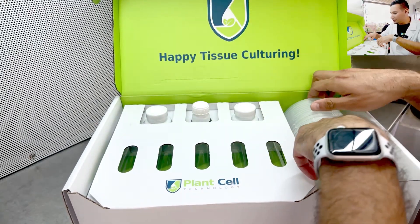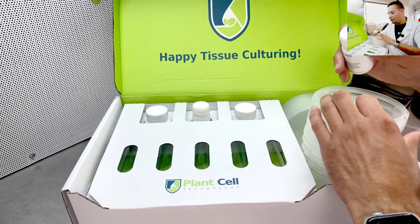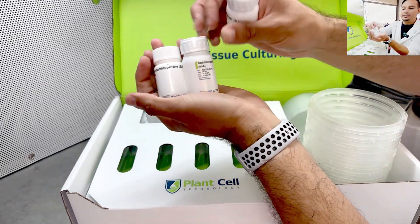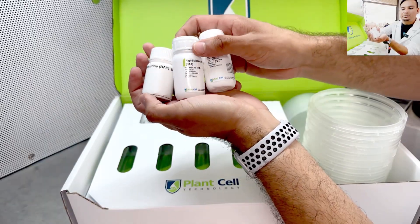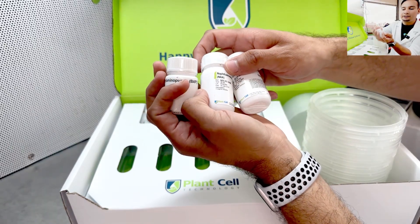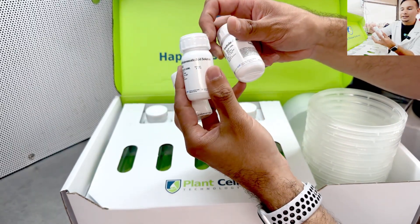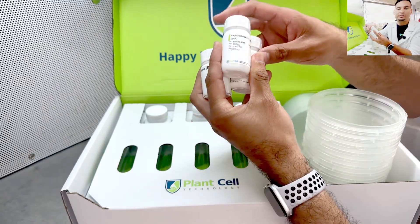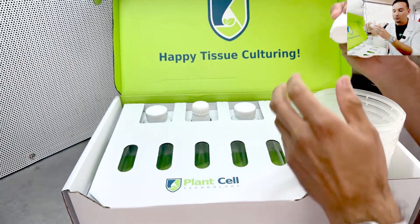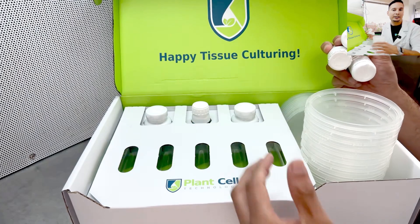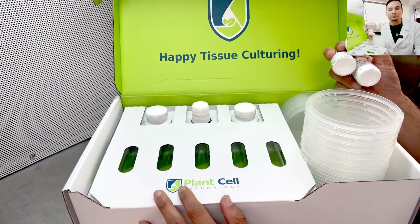Also in the kit, we include the hormones, the plant regulators needed for you to get started. We have BAP, NAA, and IBA, so these hormones are going to give you the combination of media that is going to be better suited for your plant.